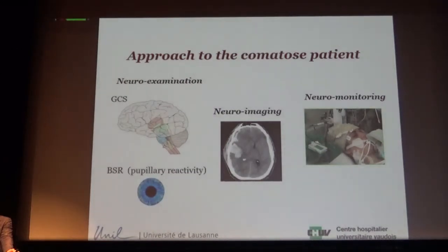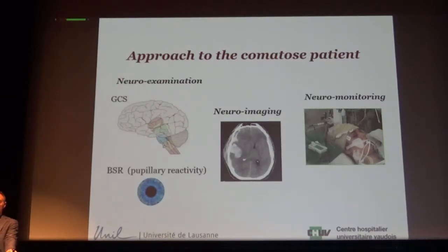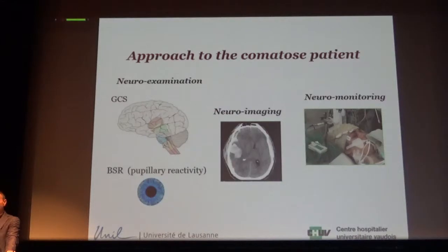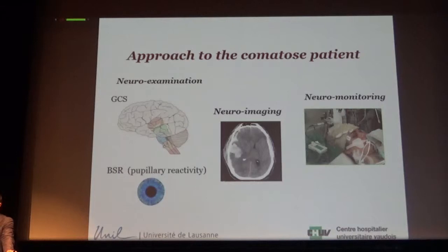The approach to the comatose patient, whatever the cause, whether primary or secondary — I will mainly concentrate on management of primary acute brain injury, whether traumatic, hemorrhagic, or ischemic — is based on the neuroexamination. Fundamentally, the Glasgow Coma Scale. You can add to the Glasgow Coma Scale all the brain stem reflexes, making it the FOUR score — Full Outline of Responsiveness.